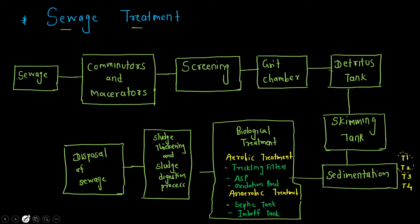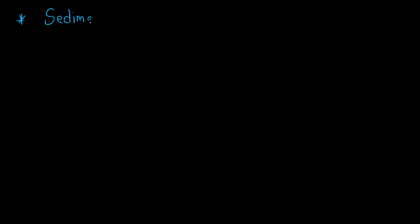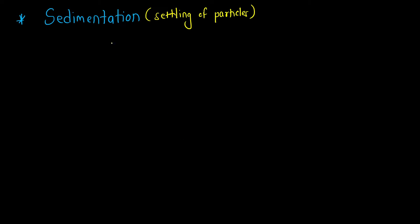The next part in the sewage waste treatment process is sedimentation. In this video we are going to see the various types of sedimentation processes. We have already seen sedimentation in water supply engineering — it means the settling of particles. We have three types of impurities based on size: colloidal impurities, suspended impurities, and dissolved impurities. This settling of particles, or sedimentation, is divided into four types.